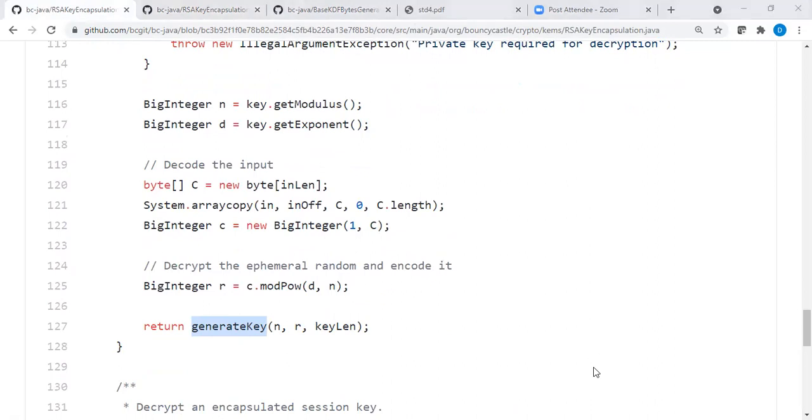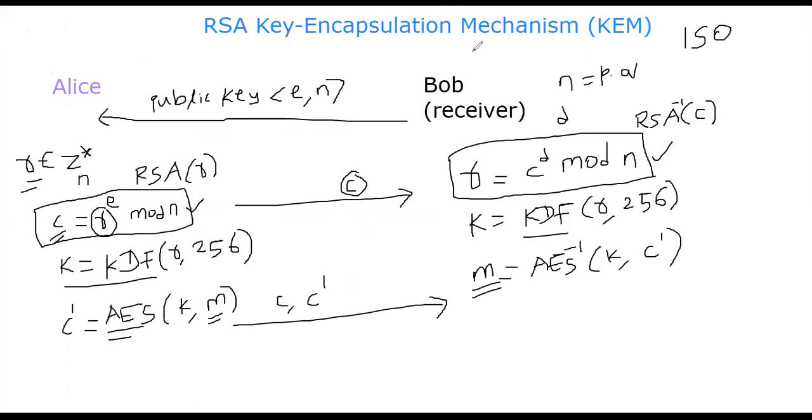So that's all. To sum up, Alice wants to talk to Bob. So Bob has to send the public key first here, N and E. Alice generates a random number R from the group Z star N. And then Alice applies RSA of R. Send the resulting ciphertext C to Bob. Bob can recover R by using his private key. Once R is obtained, Alice and Bob are no different. They have everything they need except the fact that Alice doesn't have the private key of Bob, which she doesn't need anymore. You see here, they both apply the KDF. And then Alice, on the other hand, applies AES encryption. Bob decrypts it using the key K that he received. In fact, he derived from the KDF function. All right. That's all. Thank you.